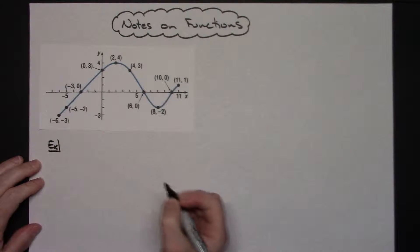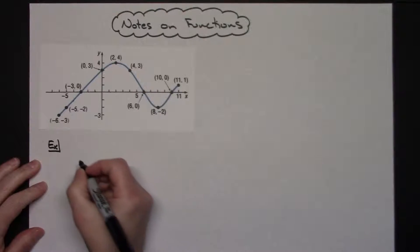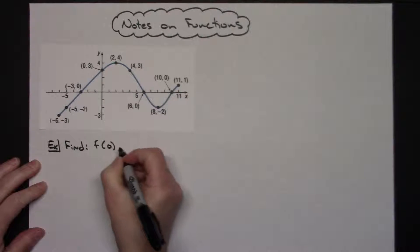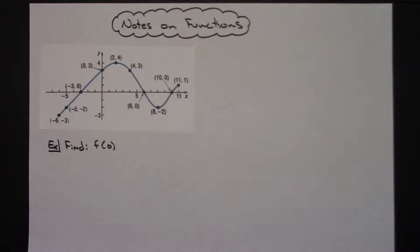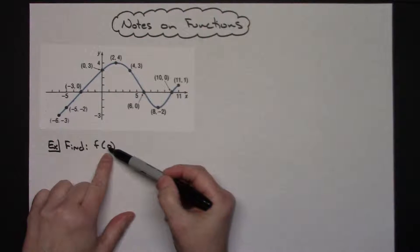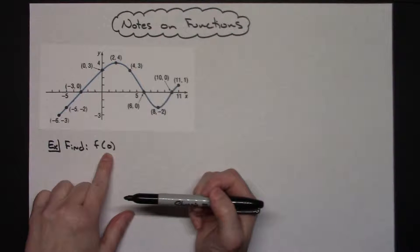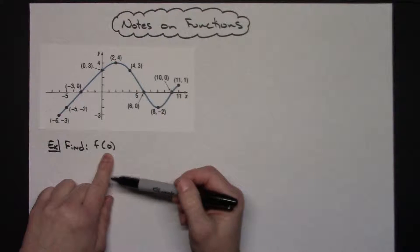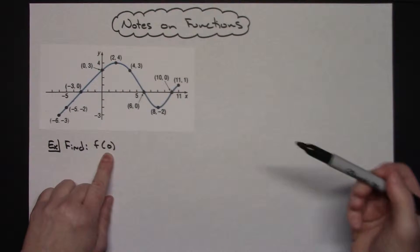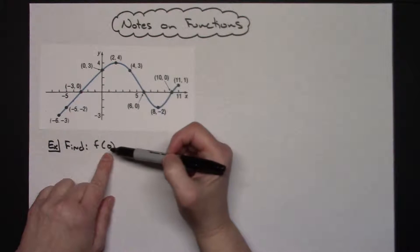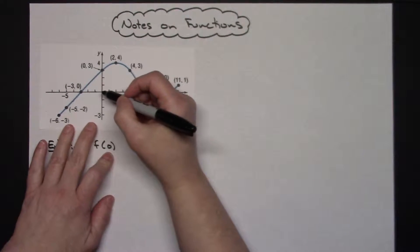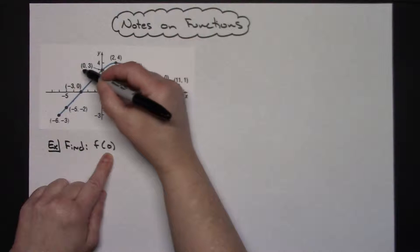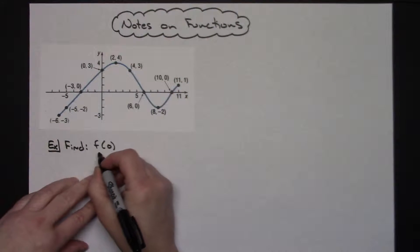The first type of question is finding a specific value of the function. For example, find f of 0. Reading the notation, this is saying: take 0 and put it into the f function — put it in along your x-axis — and then find out what y value you get out. If I put 0 into my function along the x-axis, I follow it up to where it lands on the function.